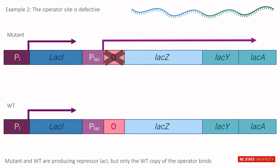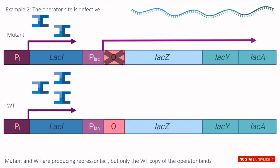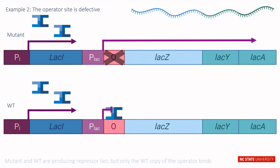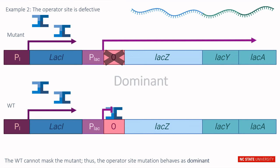Both the mutant and wild type are producing repressor lac I, but only the wild type copy of the operator can bind the lac I. This means that lac products continue to be produced from the mutant lac operon, and the wild type lac operon cannot mask the mutated version. Thus, the operator mutation behaves as dominant.